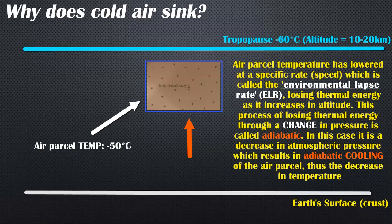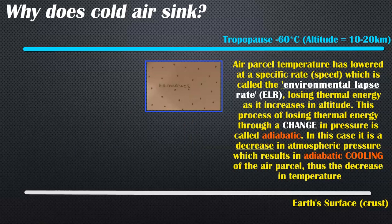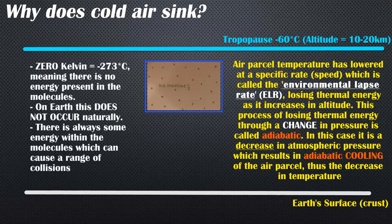You have a certain amount of collisions the air molecules are doing, and there is a certain level of energy left in this air parcel. If there was no energy, it would be absolute zero Kelvin, very hard to achieve in a natural system and would be negative 273 degrees Celsius. This temperature of negative 50 means there's still some energy left in the air molecules, still some collisions producing this temperature.